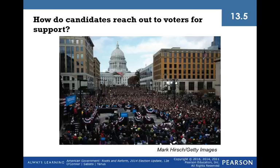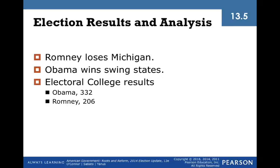Candidates hold large speeches, rallies, and events in an attempt to energize potential supporters. Here, President Obama speaks to a gathering in Madison, Wisconsin, in the weeks before the election. Election night was tense for supporters of both candidates as the race was too close to call. The evening began to go badly for Romney when he lost his home state of Michigan. Obama ended up winning all of the key swing states. When all states' votes were tallied, President Obama received 332 electoral college votes, and challenger Romney received 206.